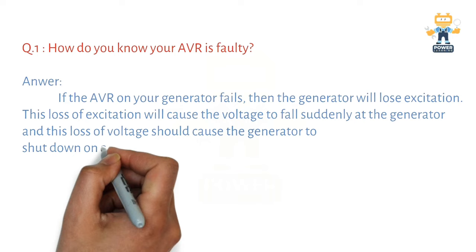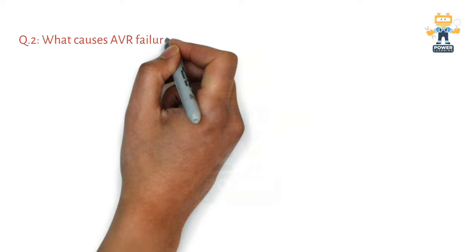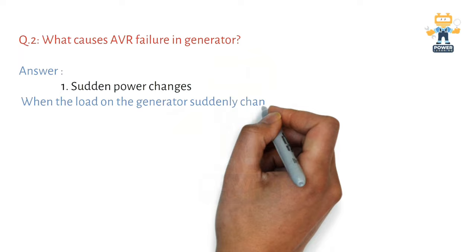This loss of voltage should cause the generator to shut down on under-voltage fault, and the result is under-voltage shutdown. Let's see question number two: What causes AVR failure in generators? Now we will see the possible causes which will fail the AVR.